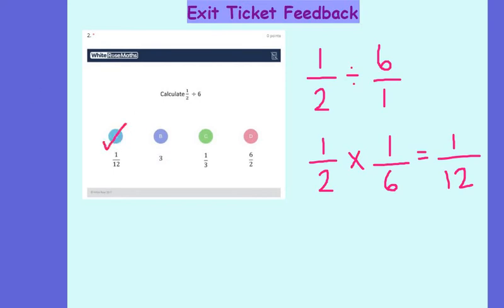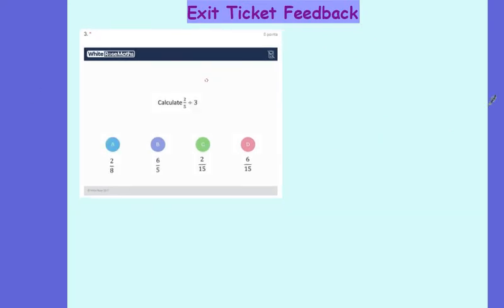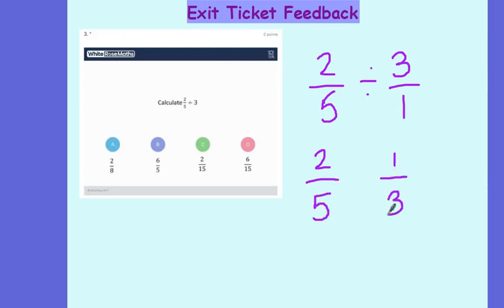And for the last question I had 2 fifths divided by 3. I'm going to write the 3 as 3 over 1. I then do keep flip change my sign which gives me 2 out of 15. So the correct answer for the last one was C.